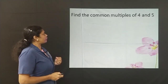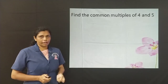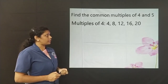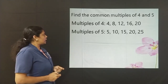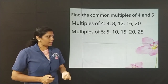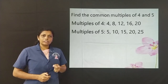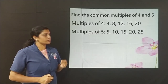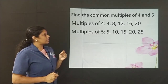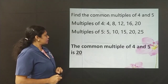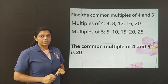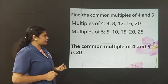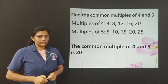Find the common multiples of 4 and 5. Multiples of 4: 4, 8, 12, 16 and 20. Multiples of 5: 5, 10, 15, 20 and 25. Now, what are the common multiples? Can you compare the multiples of the two numbers and check? Yes, 20 is a common multiple. The common multiple of 4 and 5 is 20. If you continue to write the multiples, you may get even more common multiples. I have written only one common multiple, that is 20.